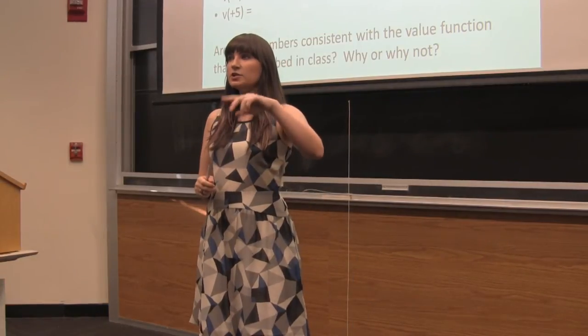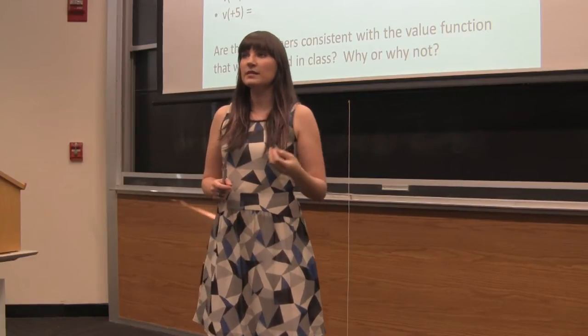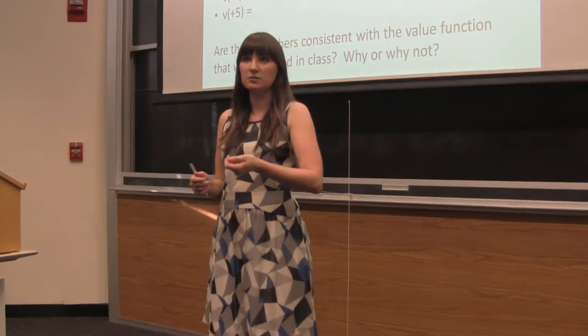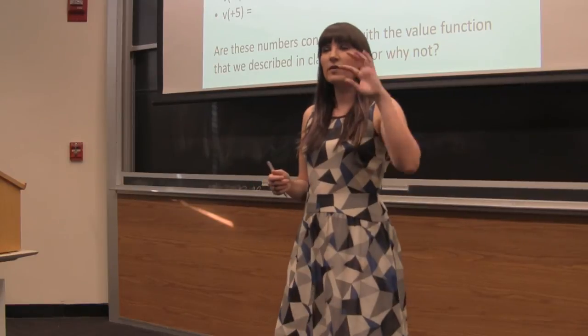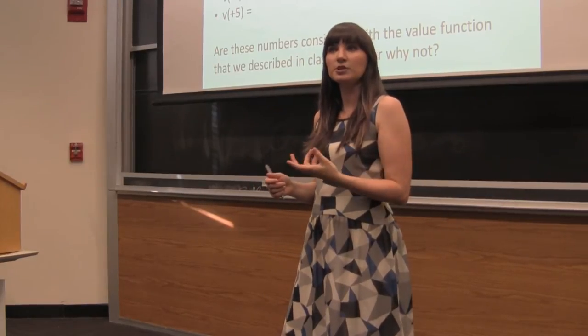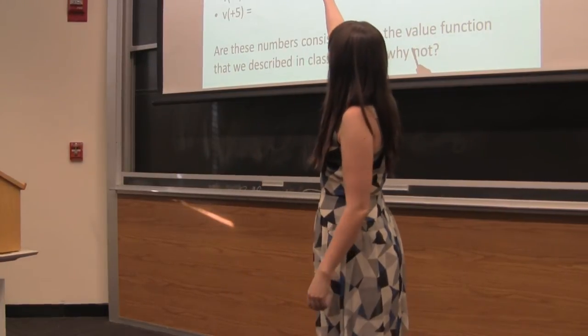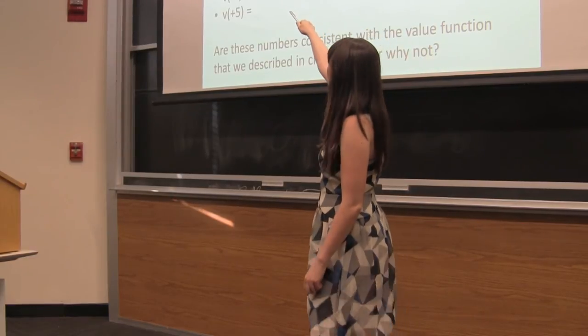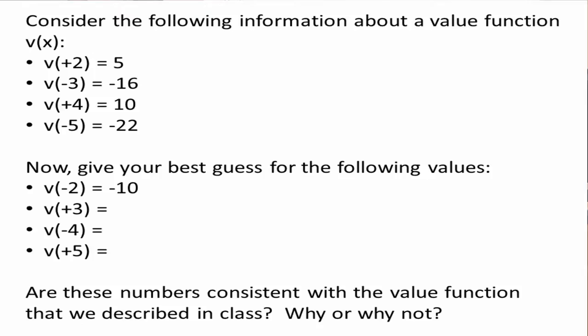Yeah, we talked about this S-shaped curve wasn't actually symmetric about the origin, because we said that we feel, as a rule of thumb, or on average, we feel losses twice as much as we feel gains. So that would suggest that rather than just doing a pure reflection, we've got to reflect that and then multiply it by 2. So we can say, well, if we feel a value of 5 from a gain of 2, then we must feel, or we probably most likely feel, if we had to guess, a minus 10 value from a loss of 2.